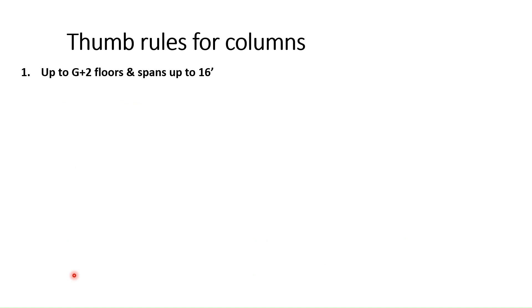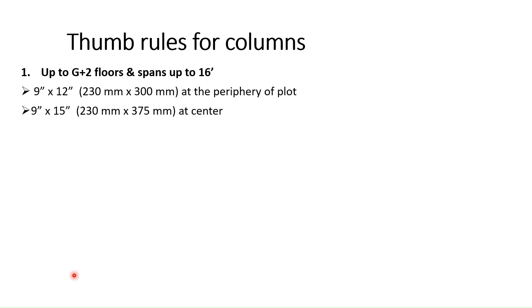Coming to the size of the columns: if your building is up to G plus 2 floors and the span of the beam is around 16 feet, then you can consider 9 inch by 12 inch columns at the periphery of the plot and 9 inch by 15 inch columns at the center. The size of the column at the center will be higher because loads will be coming from all 4 slabs at the center.